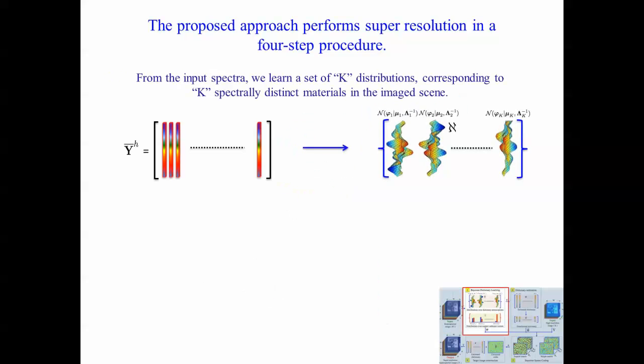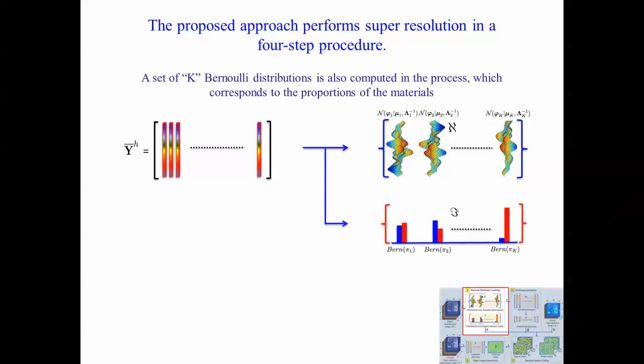In the first step, the approach learns a set of K probability distributions over the scene's spectra. These distributions correspond to K spectrally distinct materials in the image scene. A set of corresponding K Bernoulli distributions is also inferred from the input spectra, representing the proportions of the materials in the image scene. Both distribution sets are inferred nonparametrically using a Bayesian framework.